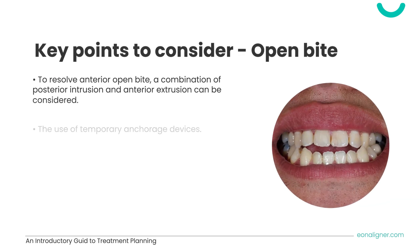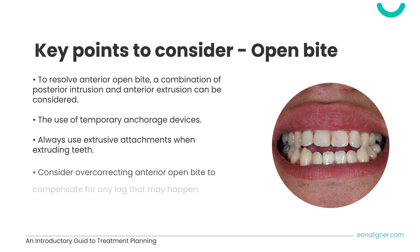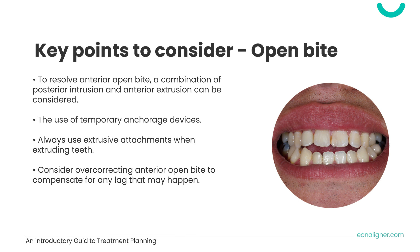Key points when planning to resolve open bite: First, consider a combination of posterior intrusion and anterior extrusion, because posterior intrusion will help deepen the bite anteriorly and contribute to closing the bite. Second, if you plan to do posterior intrusion alone, the use of temporary anchorage devices is recommended depending on the amount of intrusion desired. Third, extrusive attachments must be used when extruding anterior teeth. Lastly, consider overcorrecting anterior open bite to compensate for any lag that may happen.